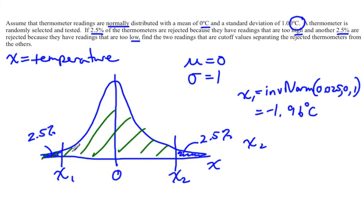I know the area above is 2.5%. The area under the entire normal curve is 1, so this area would be 1 minus 0.025, or 0.975.